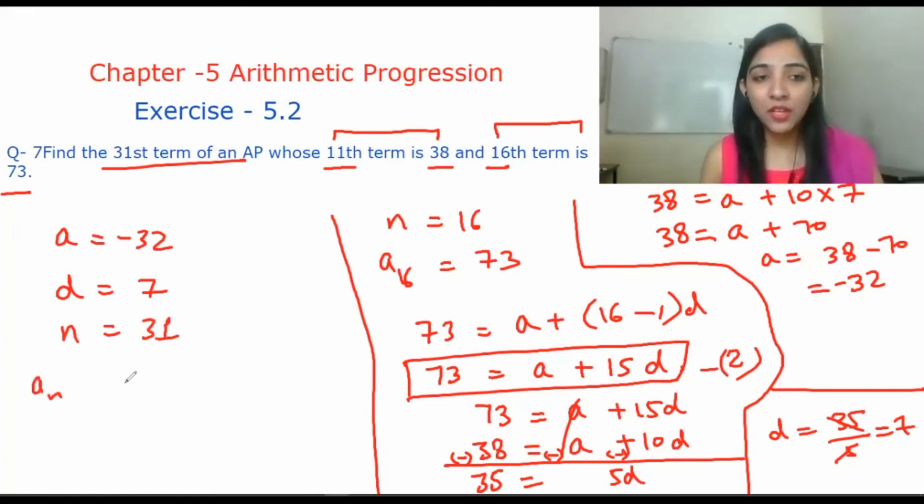a_n = a + (n-1)d. So a_31 equals a, which is minus 32, plus n, which is 31, minus 1, times d, which is 7.